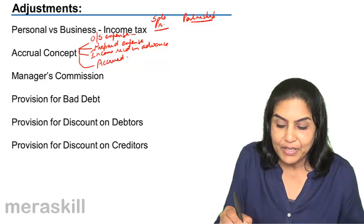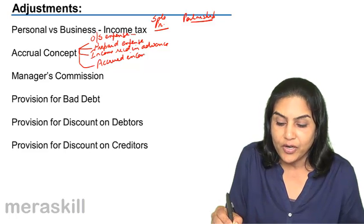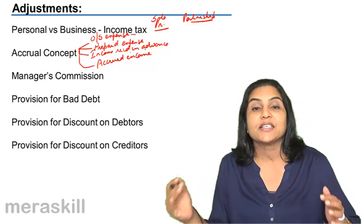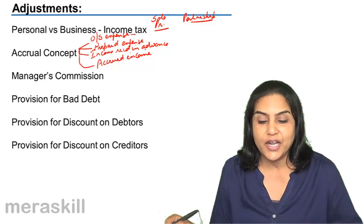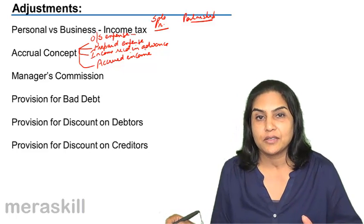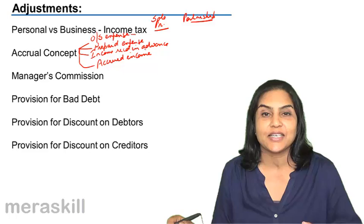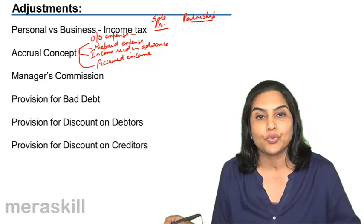Or similarly, we may have accrued income, that is income earned but not received, which is an asset since it is a receivable. So, the accrual concept then gives rise to four of these items: two assets and two liabilities.